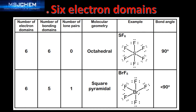We're now moving on to six electron domains around the central atom. We start with six electron domains where all six are bonding domains with zero lone pairs of electrons. The molecular geometry is octahedral. An example is SF6 — here's the Lewis structure. The bond angle is 90 degrees.